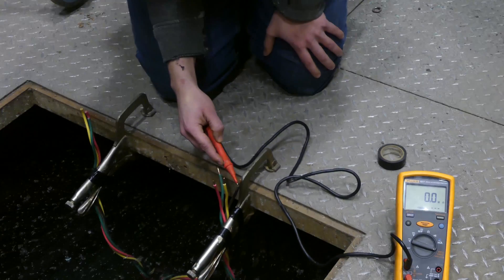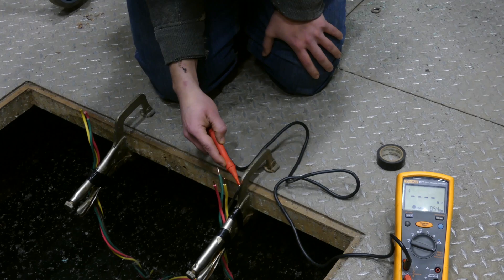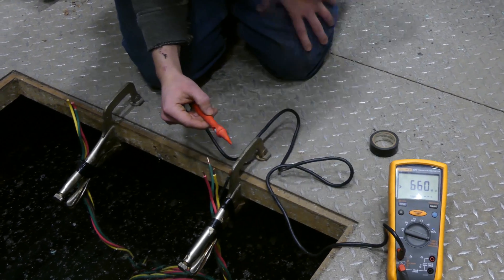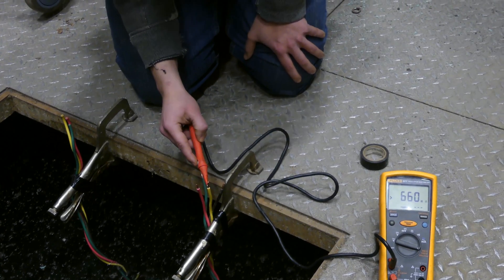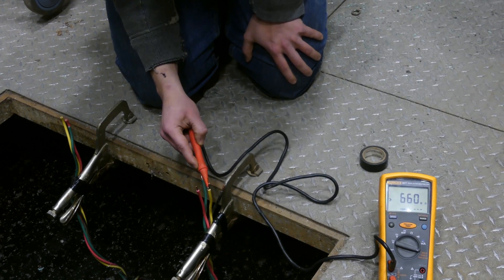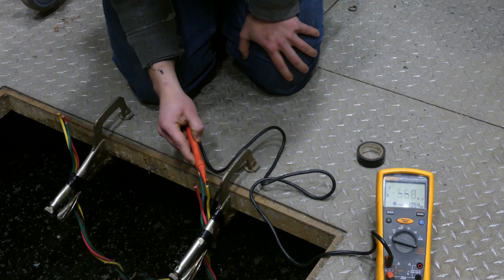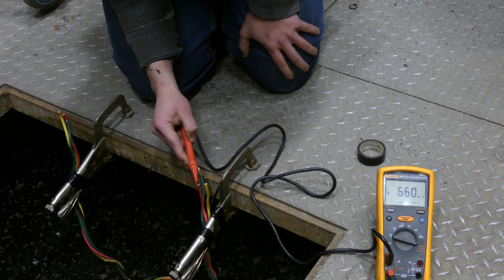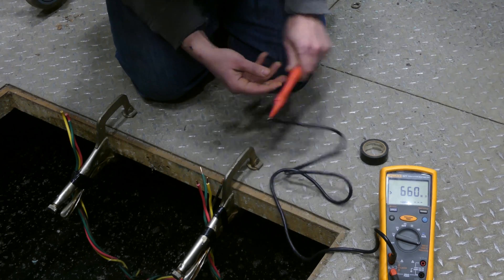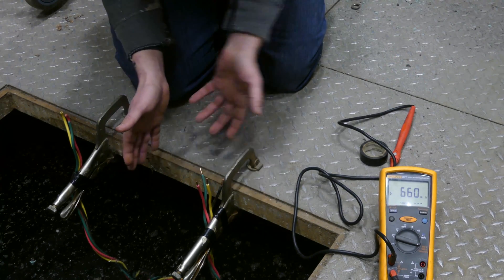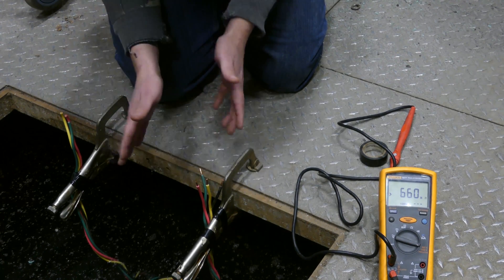But anyways, let's go ahead and test one of these. So we'll test the black here. And we get 660. So that's actually 660 million ohms of resistance. So that is definitely perfect wire. 660 again on the yellow and 660 again on the red. So what I've just shown you is a wire test that we have perfectly good wire.